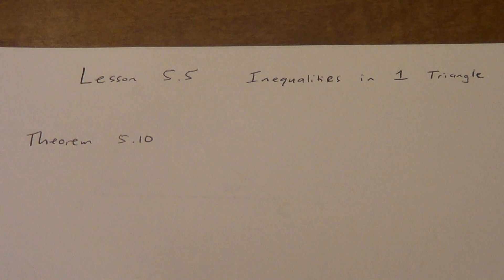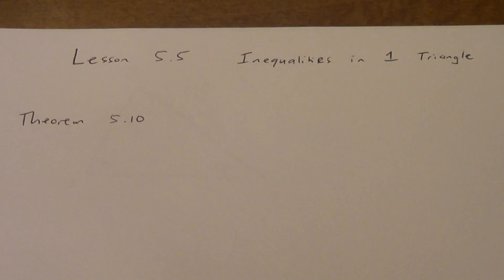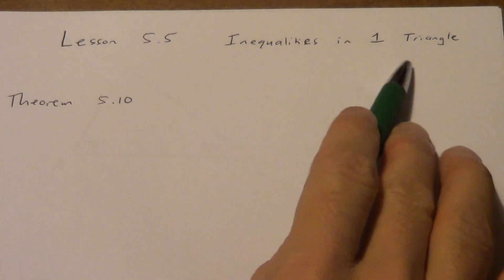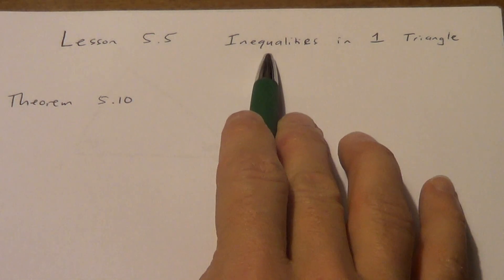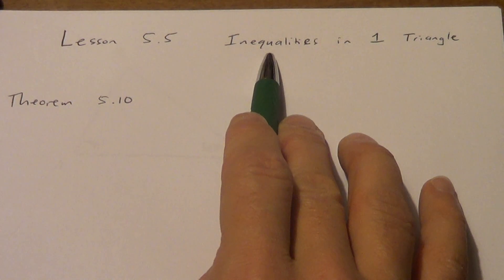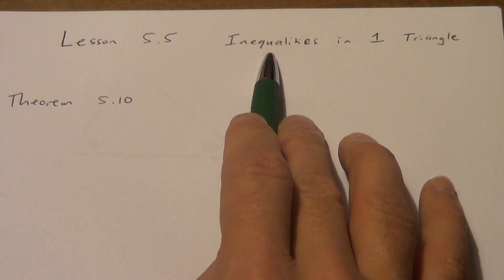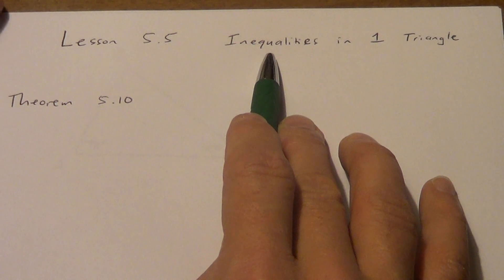Okay, lesson 5.5 today. We're going to talk about inequalities in one triangle. So what do we mean by inequalities? We mean less than and greater than and things like that. You're not going to be dealing with equations where we have an equal sign. We're going to be saying something is greater than something else or something is less than something else.